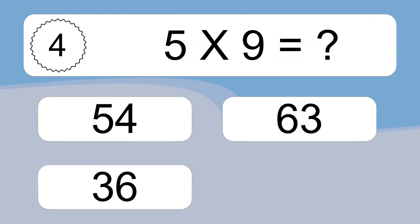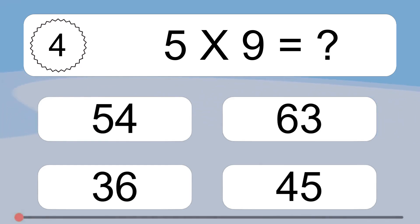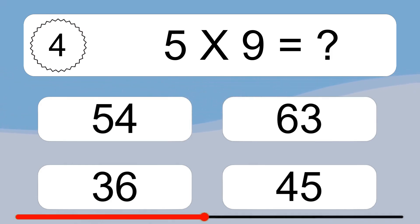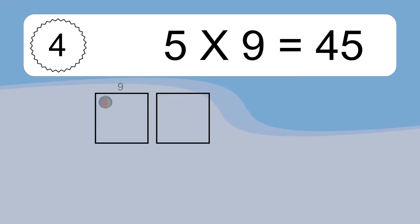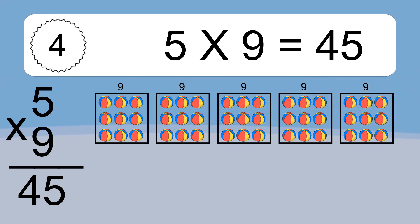Five times nine equals what? Five times nine equals forty-five. We have five boxes, and each box has nine colorful balls inside. If you count all the balls in all the boxes together, you will have five times nine balls. This equals forty-five balls.